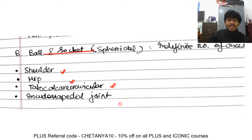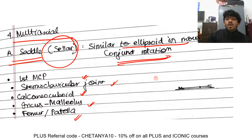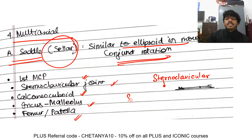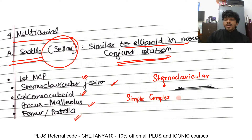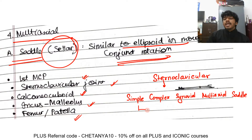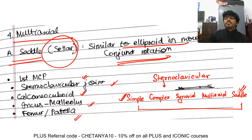Multi-axial joints include saddle joints (sellar joints), similar to ellipsoid but with rotation also possible — examples are the first carpometacarpal joint, sternoclavicular joint, calcaneo-cuboid joint, incus-malleus joint, and femoro-patellar joint. Ball-and-socket joints include the shoulder, hip, talocalcaneonavicular, and incudostapedial joints. For the sternoclavicular joint specifically: it is a simple joint (two bones), a complex joint (has an articular disc), a synovial joint, multi-axial, and a saddle type.